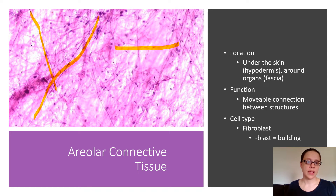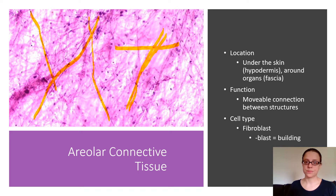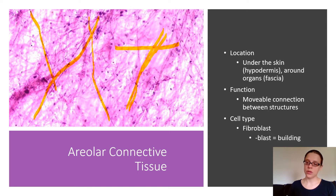The thicker pink fibers going off in the background here are collagen, and the thinner dark purple fibers are elastic fibers. One of the main functions of this tissue is to provide a movable yet strong connection between structures, which is why it's a blend of stronger collagen fibers and more flexible elastic fibers. All of these fibers are being produced by cells called fibroblasts. Whenever you see the word blast, it means to build, so fibroblasts are cells which build fibers.